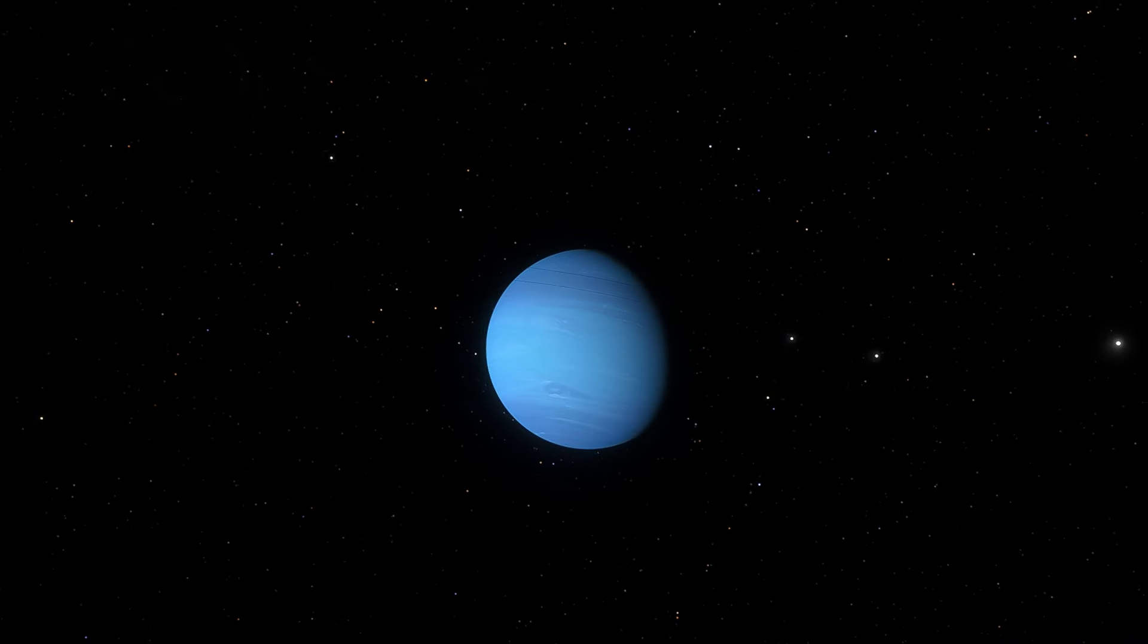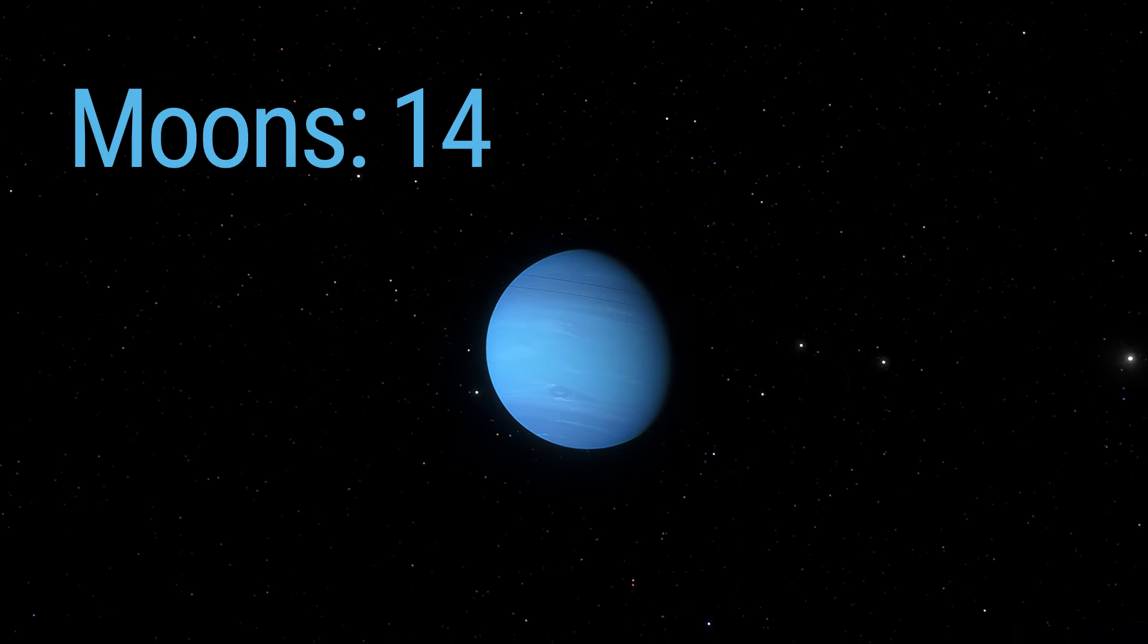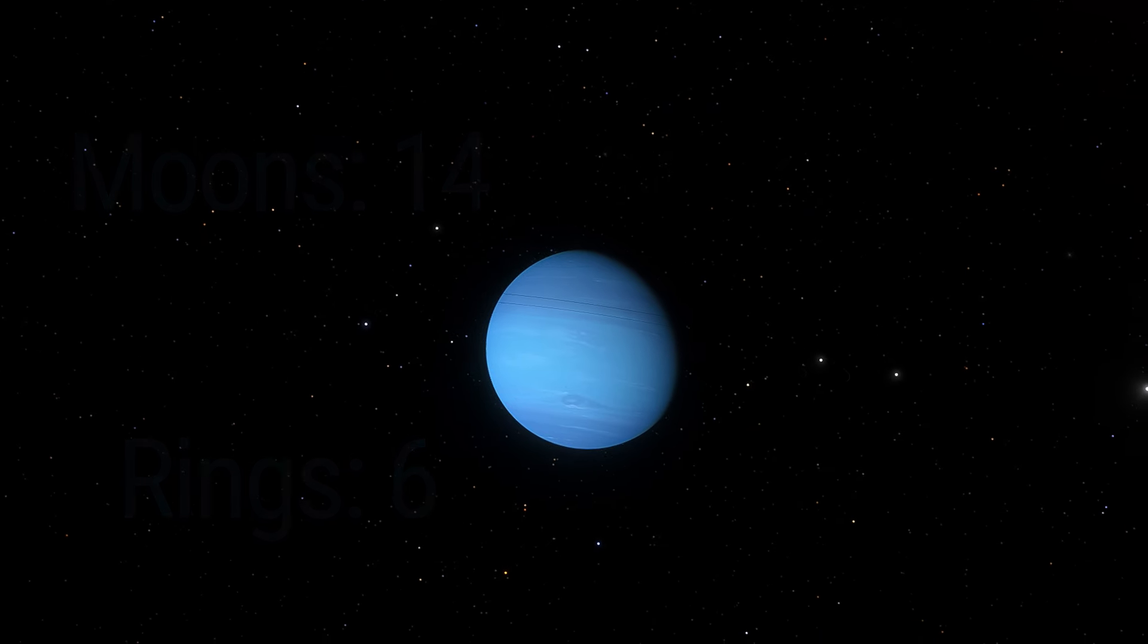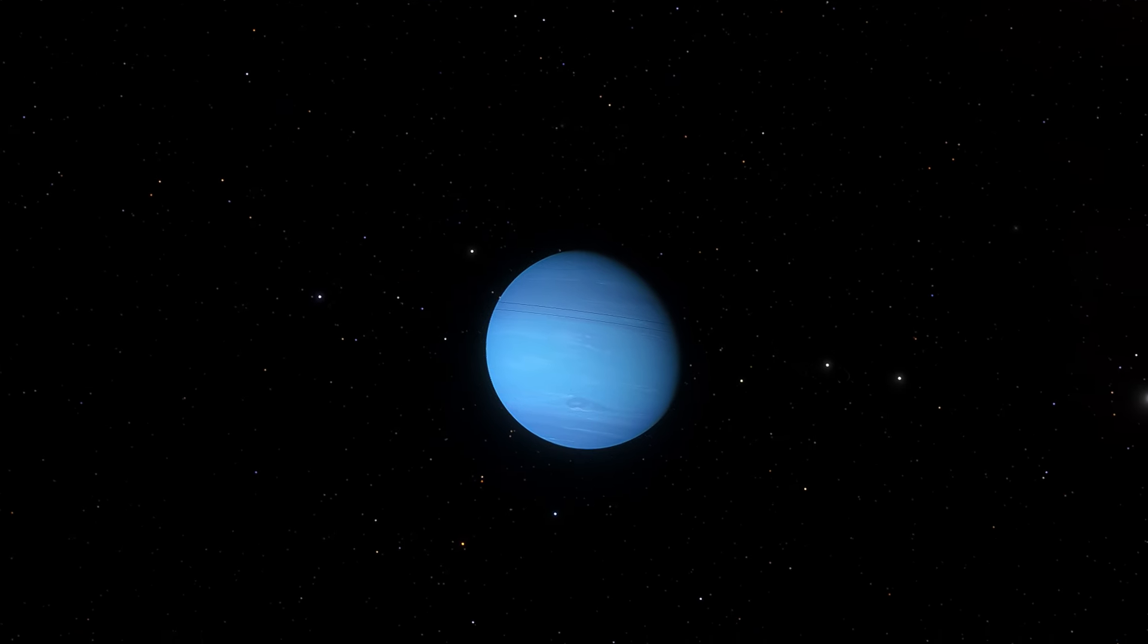Neptune is accompanied by 14 known moons and six rings, each a whisper of the planet's dynamic history and the gravitational dances that shaped them.